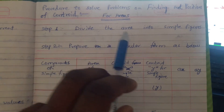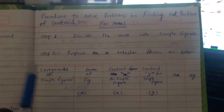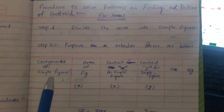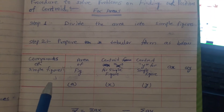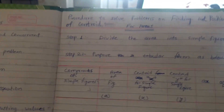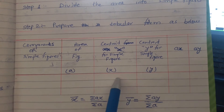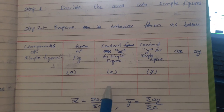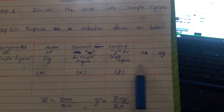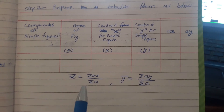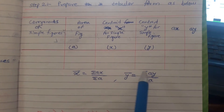Step one: divide the area into simple figures. Step two: prepare a tabular form with columns for the component or figure — which may be rectangular, triangular, or circular — then the area of the simple figure, then the centroid x-distance and centroid y for each simple figure, and then calculate ax and ay. The main position of centroid is then defined by finding x̄ and ȳ.